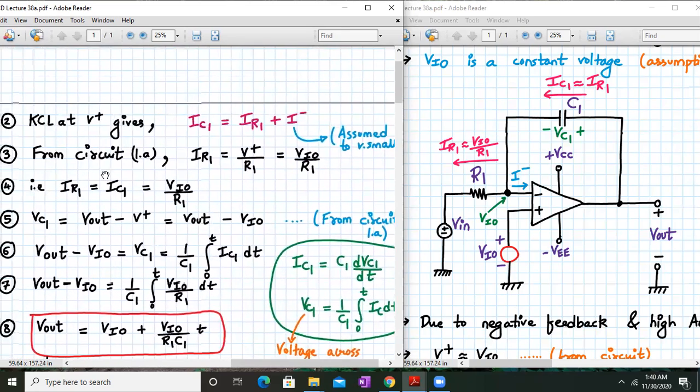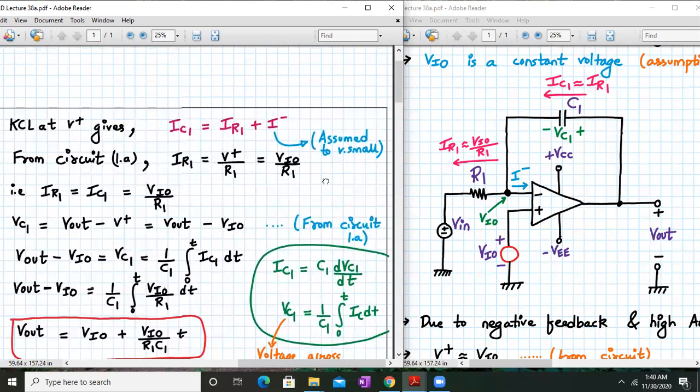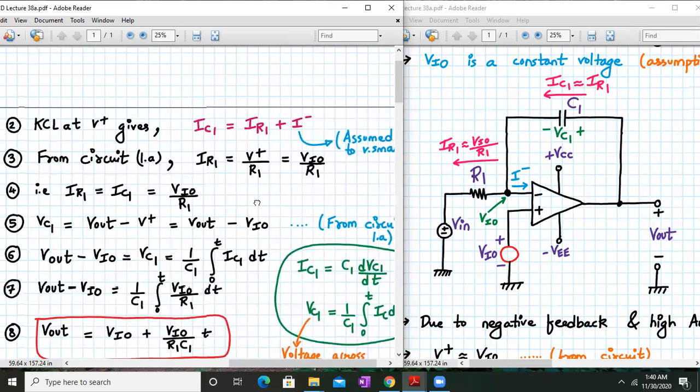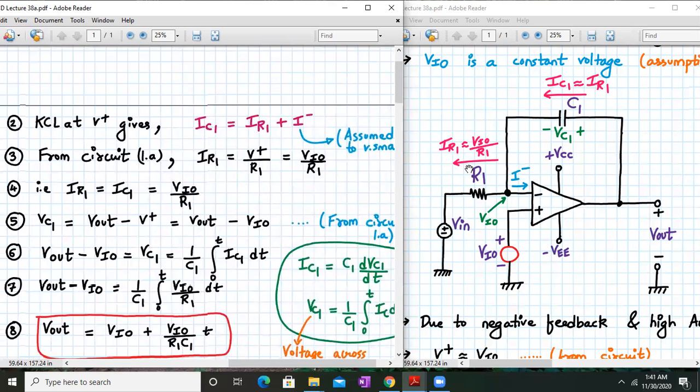Since we are finding the output expression in absence of input, that is VIN equal to 0, we are assuming that the capacitor is having no charge initially. That is VC1 at T equal to 0 is 0. Let's apply KCL at V- node. We get sum of incoming currents is equal to sum of outgoing currents. Incoming current is IC1 and outgoing currents are IR1 and I+ and I-. From this circuit, we can also write IR1 is equal to V- upon R1, which will be equal to VIO upon R1. Since I- is very small, we can assume IR1 is equal to IC1 is equal to VIO upon R1.